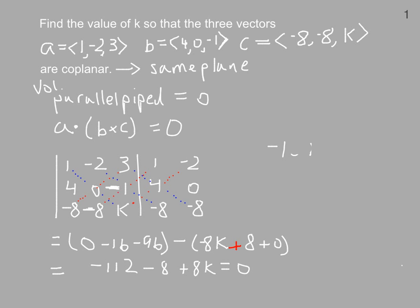And instead of getting negative 104, we get negative 120. And so 8k is 120, or k is 15.